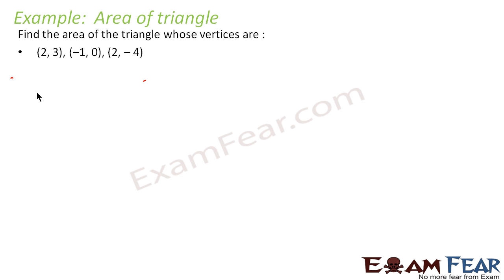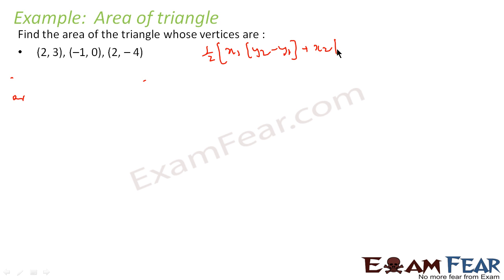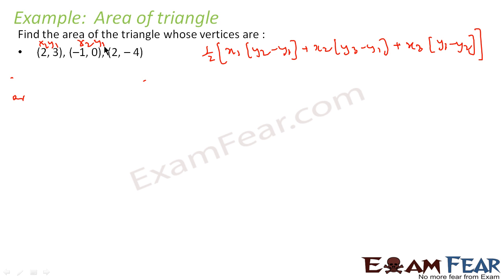So let's find the area. The formula for area is: 1/2 into x1(y2 - y3) + x2(y3 - y1) + x3(y1 - y2). Here the coordinates are labeled x1, y1 and x2, y2 and x3, y3.